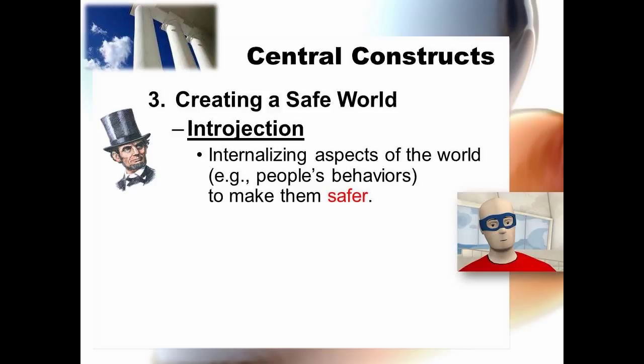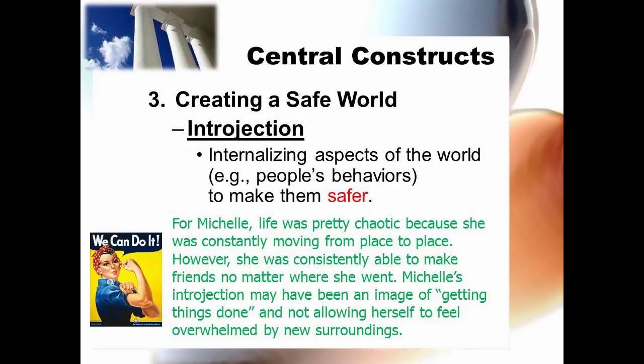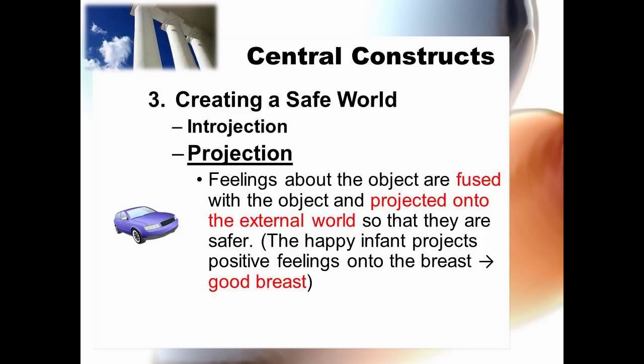Here's what Michelle's introjection might have looked like while growing up. Next is projection, in which feelings about the object are fused with the object and projected onto the external world, so that they are safer. An example is the happy infant projecting positive feelings onto the breast, making it the good breast.